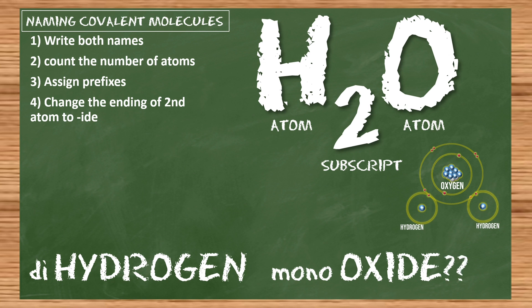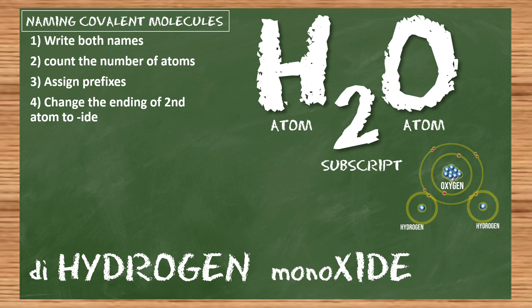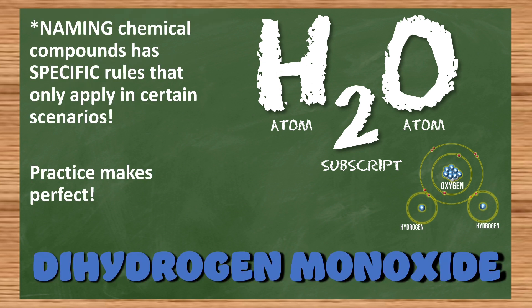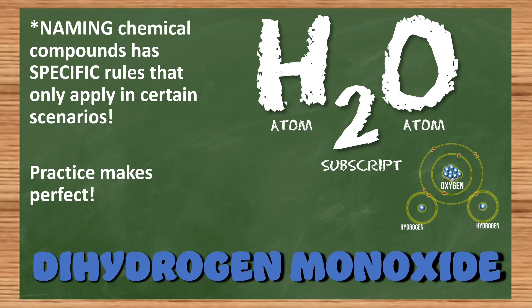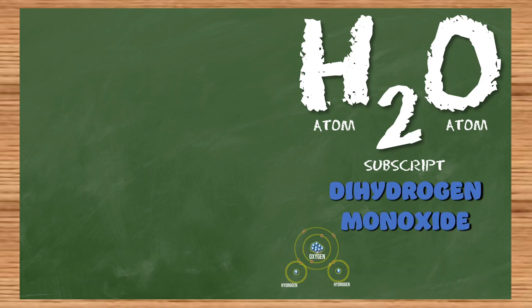We don't want two vowels next to each other, so we drop one — it's just 'monoxide,' not 'mono-oxide.' The full name is dihydrogen monoxide. Naming chemical compounds has a lot of specific rules that only apply in certain scenarios, so practice makes perfect. You know, I just work here — I didn't make up the rules. Wait — H₂O is water? It is water!